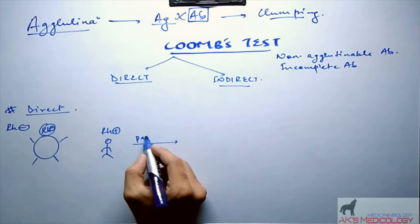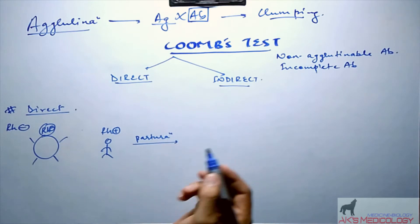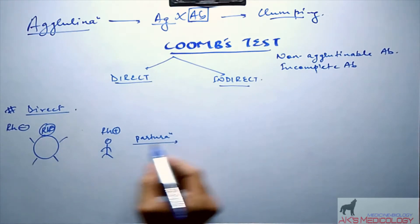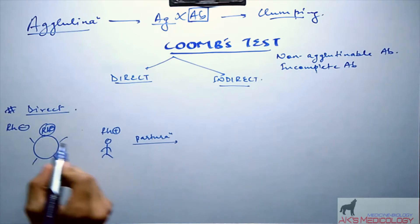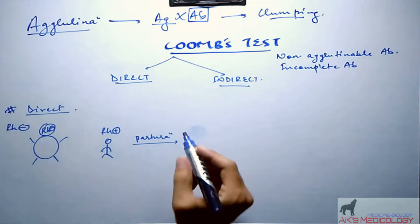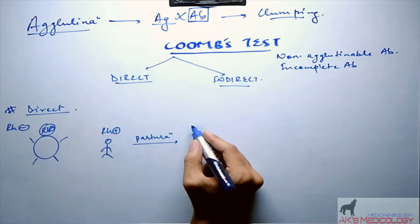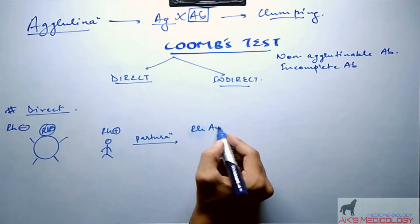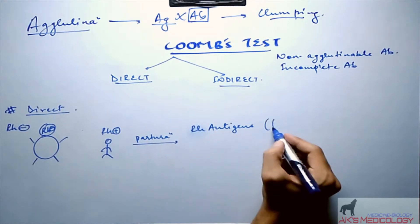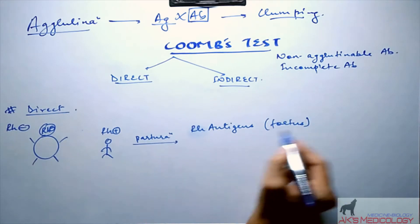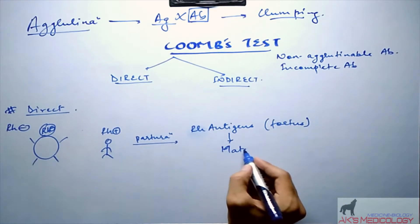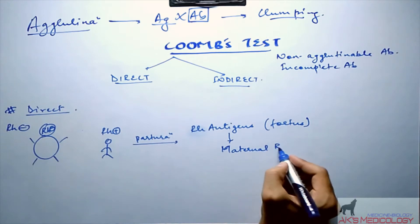During parturition or during delivery of the baby, some amount of fetal blood comes in contact with the maternal blood. So there is some passage of these Rh antigens from fetus to the maternal blood.